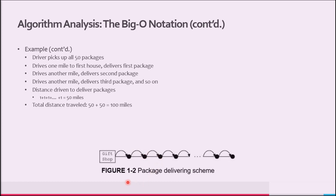Figure 1-2 illustrates this delivery scheme. Using this scheme, the distance driven by the driver to deliver the packages is 1 plus 1 plus 1, 50 times, equals 50 miles. Therefore, the total distance traveled by the driver to deliver the packages and then getting back to the shop is 50 plus 50, making it 100 miles.